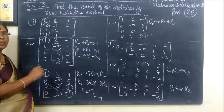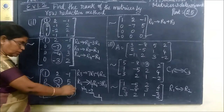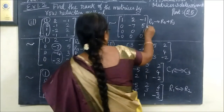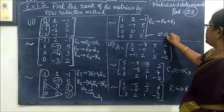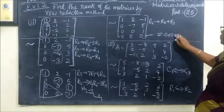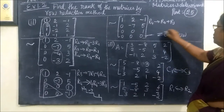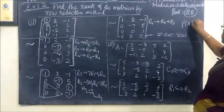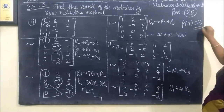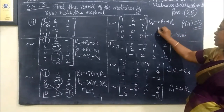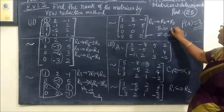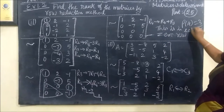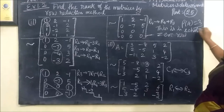Let's take the 4×0 element. The 2×0 element is 1, 2, 3. Therefore, row of A equals 3. This is in row echelon form.